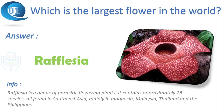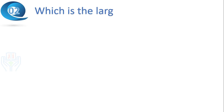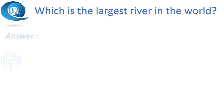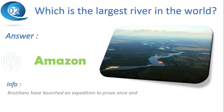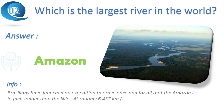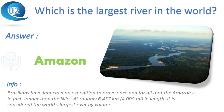Next question: which is the largest river in the world? Answer: Amazon. Brazilians have launched an expedition to prove once and for all that the Amazon is in fact longer than the Nile. At roughly 6,437 kilometers in length, it is considered the world's largest river by volume.